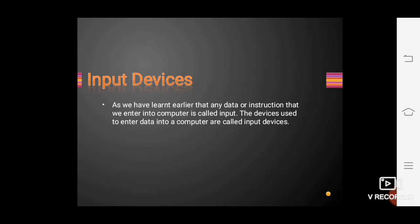Let's take one example. If you want to eat something, you eat with the help of your mouth. That fruit or food is your data, which you feed into your body with the help of your mouth — your mouth is your input device. Just like that, in a computer, if you want to enter something, you need input devices.